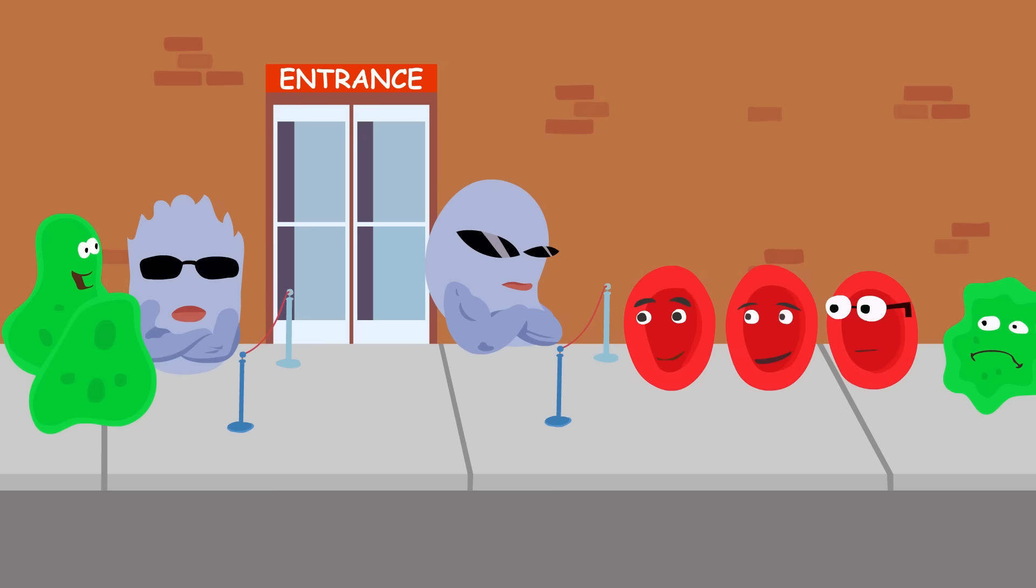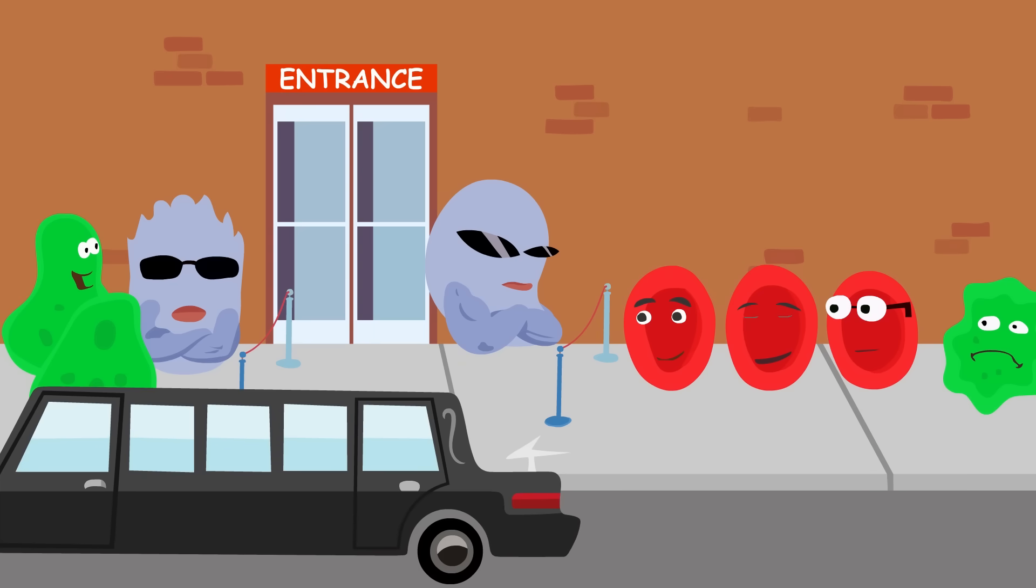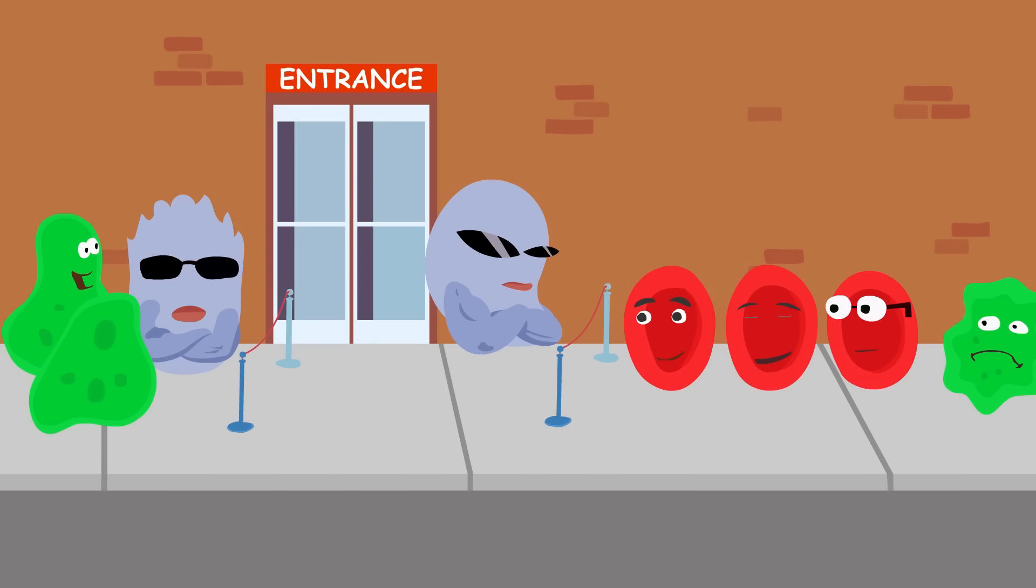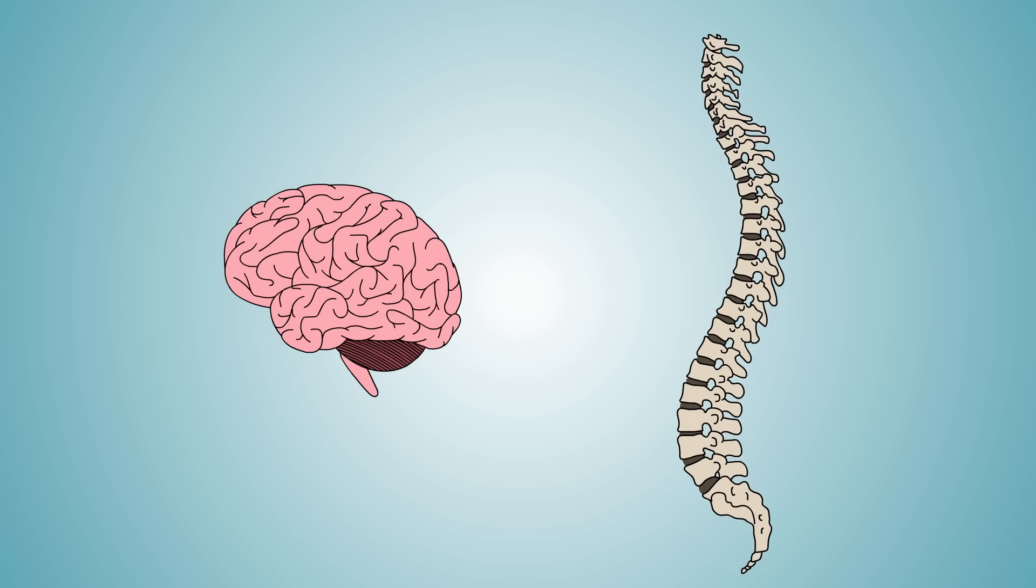In the fortress of our body, the leukocytes are VIPs. They have an all-access pass to the body, except, of course, to the brain and spinal cord.